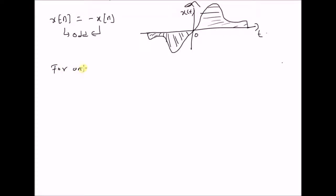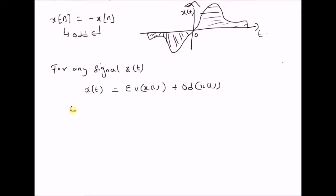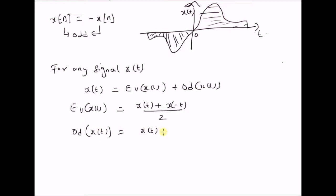Now, for any signal x of t, the signal can be an even signal, an odd signal, or can be neither. However, it can always be written as the sum of an even signal plus an odd signal, where the even signal is the average of the signal and its reflection, and the odd signal is one half of the difference between the original signal and its reflection. When you add these two components, we get the original signal back.